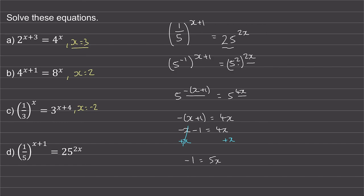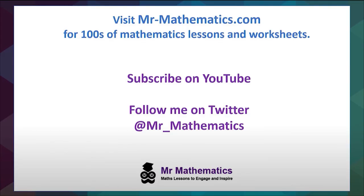Finally, we'll divide both sides by 5 — these will cancel — so we're left with x is equal to negative one fifth. Thank you very much for watching and I hope you found that useful. Thanks again and take care.